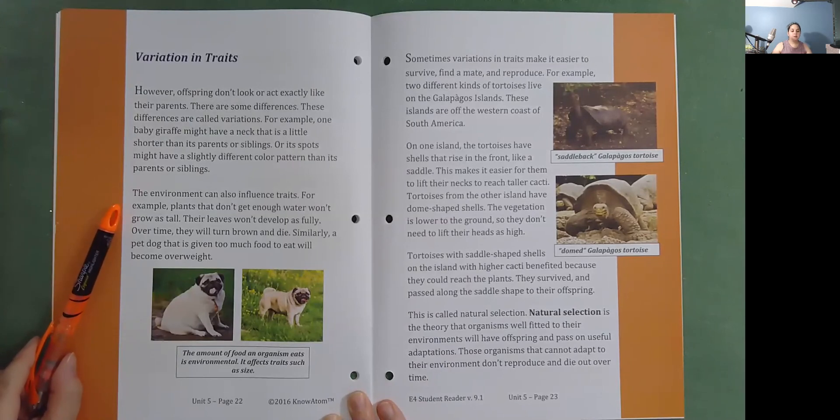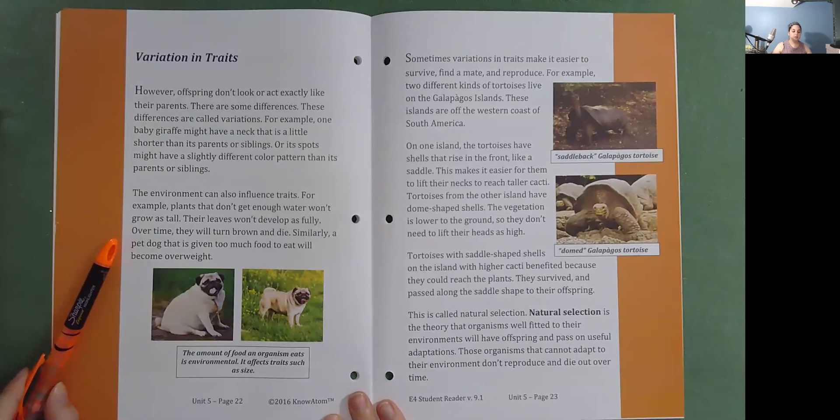For example, plants that don't get enough water won't grow as tall. Their leaves won't develop as fully. Over time, they will turn brown and die. Similarly, a pet dog that is given too much food to eat will become overweight. The amount of food an organism eats is environmental. It affects traits such as size.